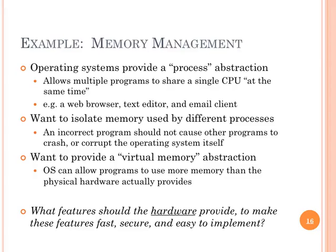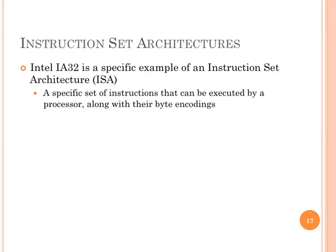Now let's start talking about specific details for this week and going forward. IA32 is an architecture that is very involved — there are over 1,700 pages in the manual to describe it. This is an example of an instruction set architecture: it's a set of instructions and a description of the data values they can operate on that allow us to program a processor implementing that ISA. You can have one company develop an ISA and another company implement processors that conform to it. Two companies that implement IA32 are Intel, who developed it, and AMD.